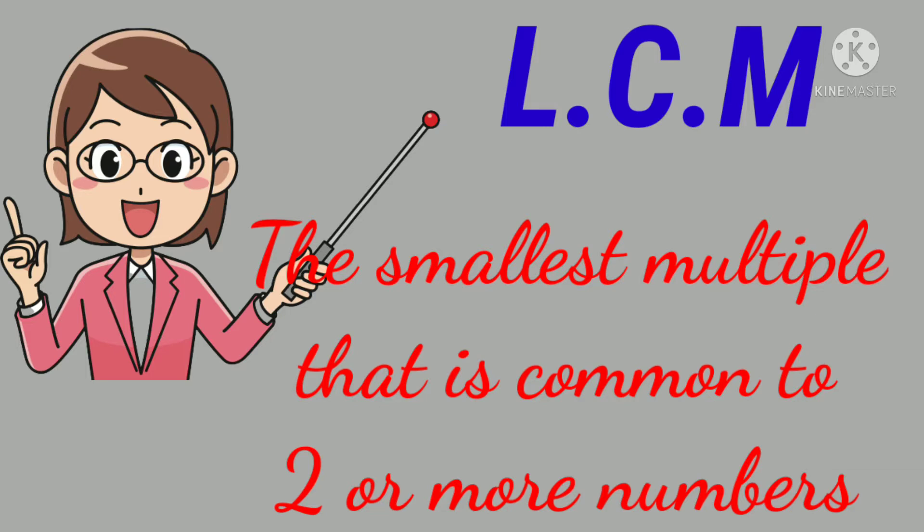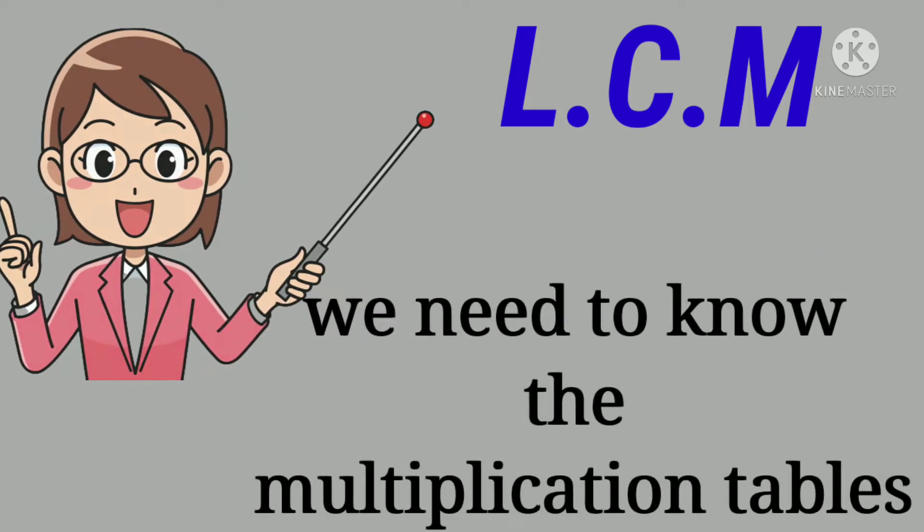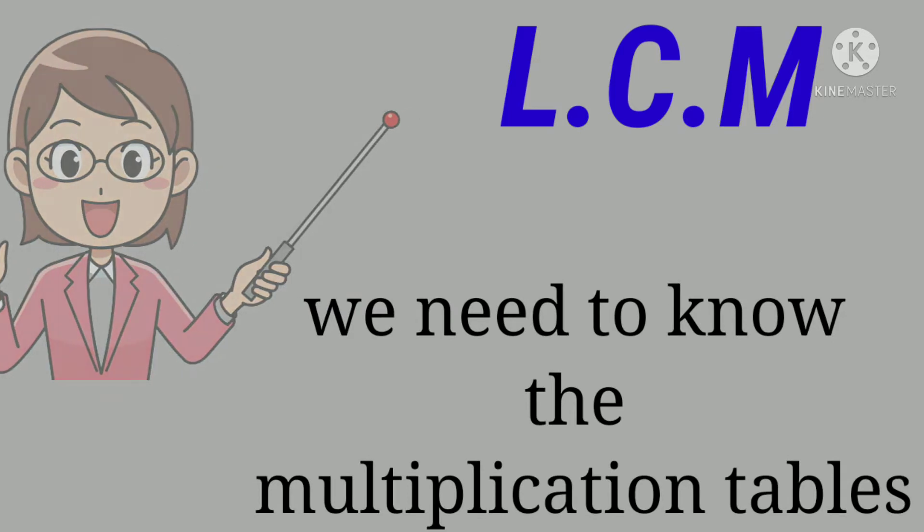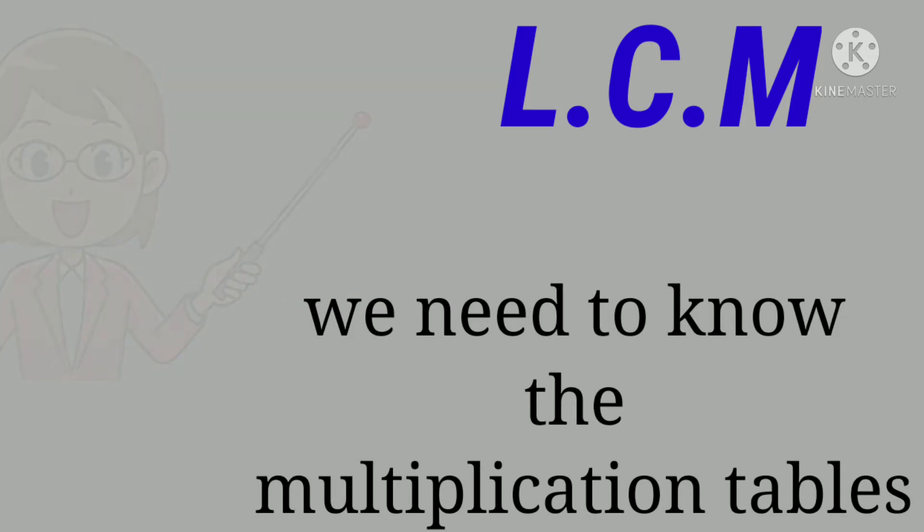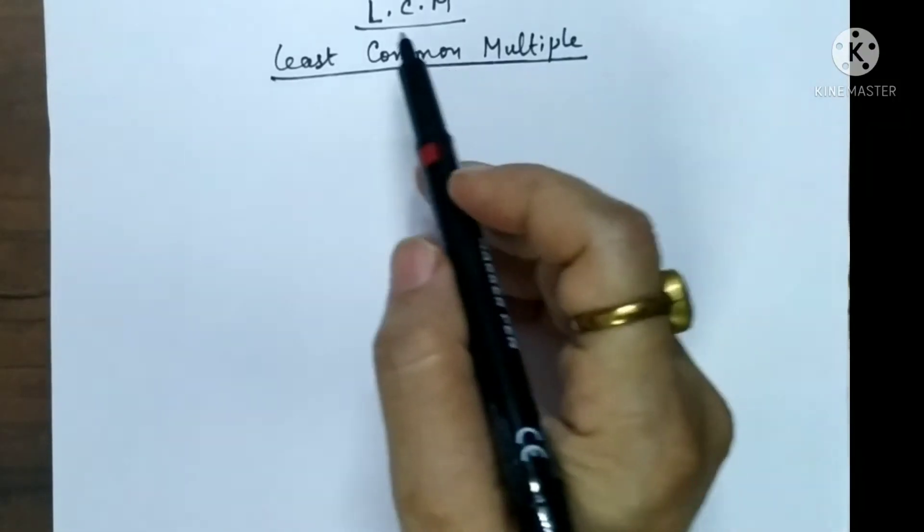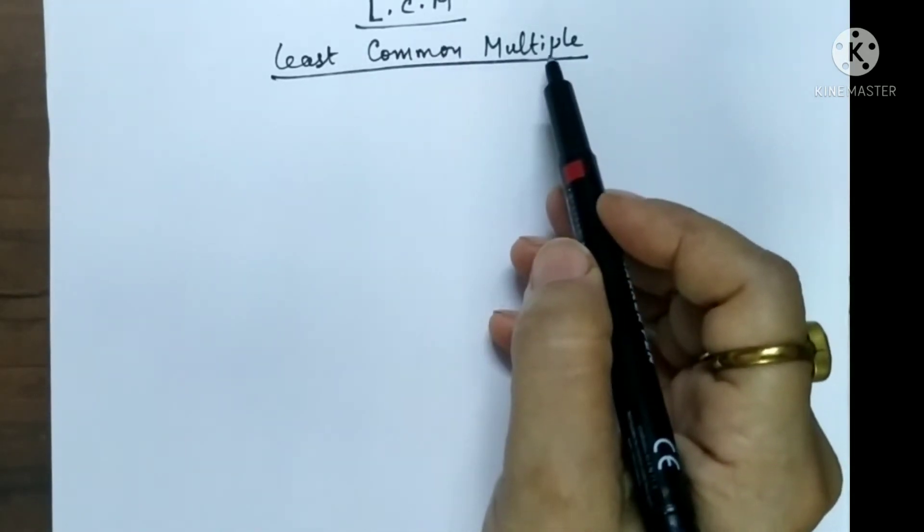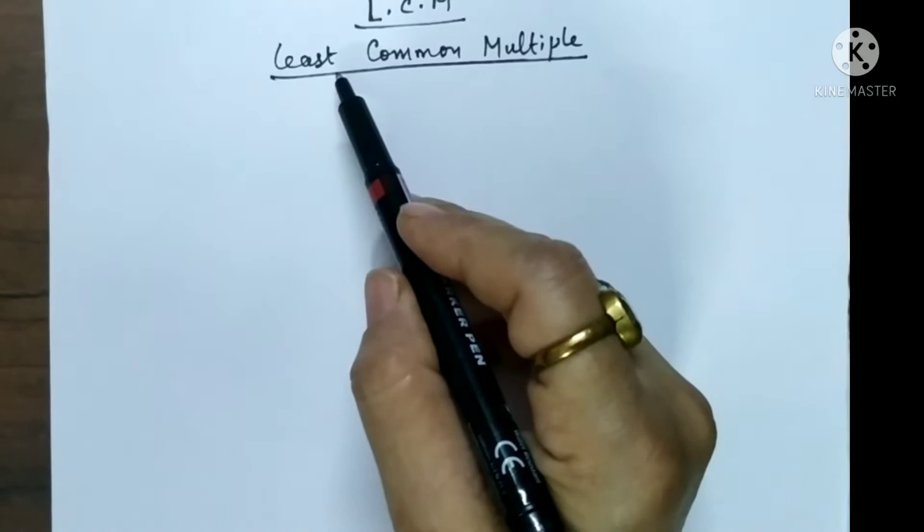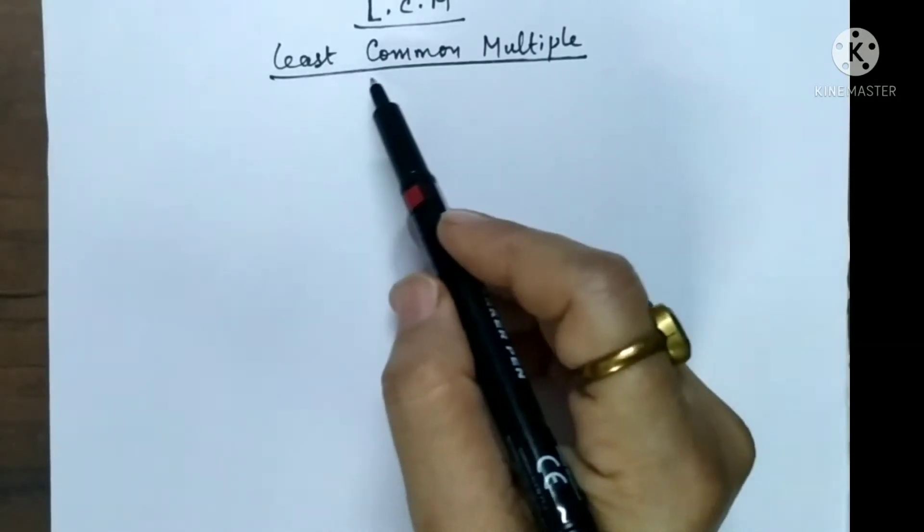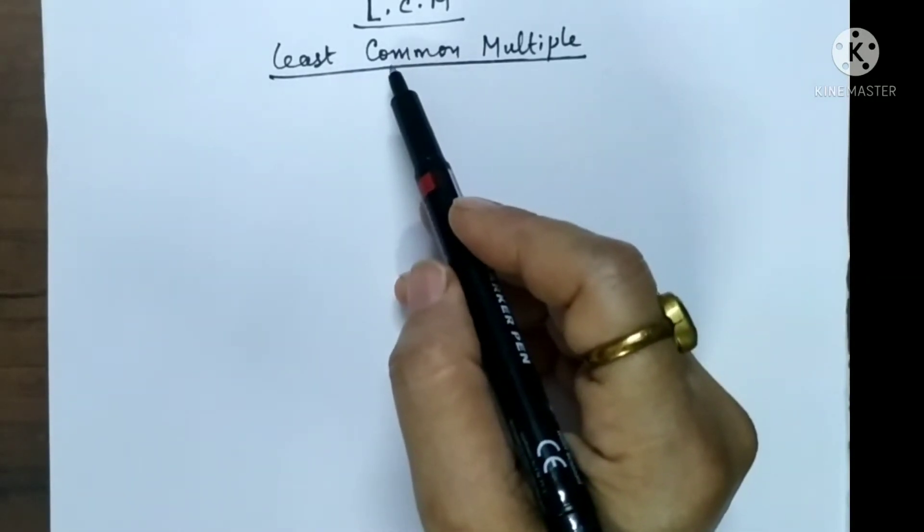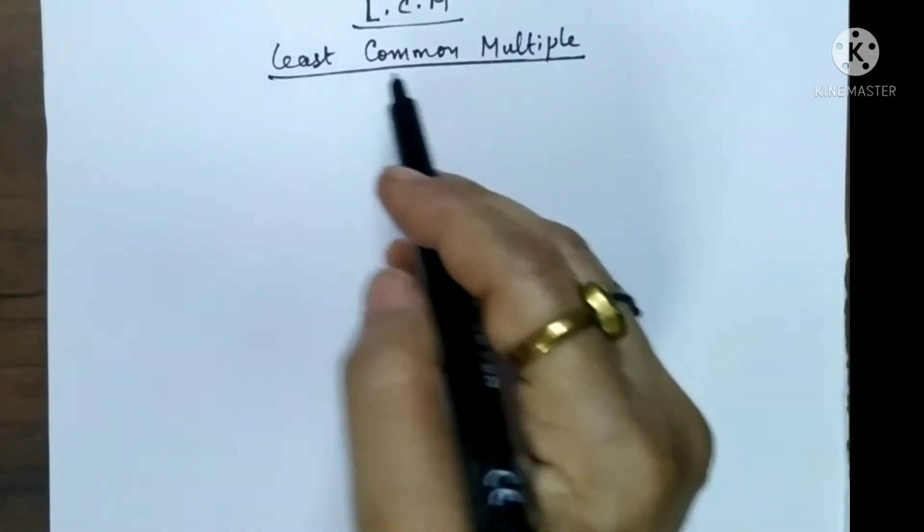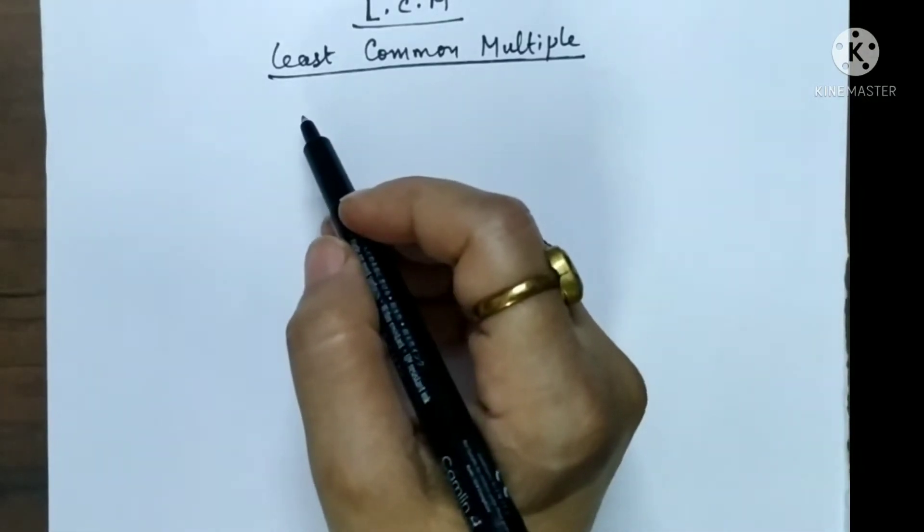The smallest multiple which is common in two or more numbers we call LCM. So let's learn LCM. LCM means least common multiple. In this video I am going to tell you how to find out the LCM of smaller numbers and in the next video I will tell the LCM of the bigger numbers.